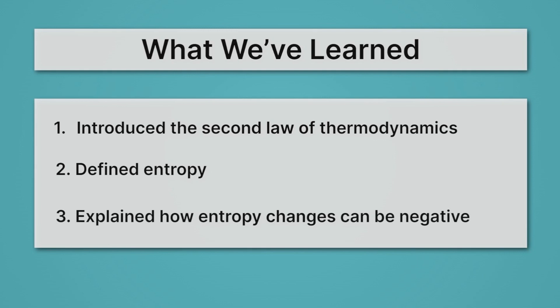Lastly, we explained how entropy changes can be negative. That's probably the most complicated part of this lesson. But the basic point is the entropy change of the universe has to be positive, but some small local pockets can decrease in entropy, as long as the things around it increase in entropy by more.